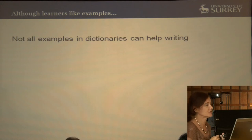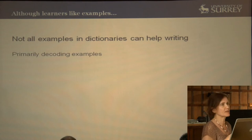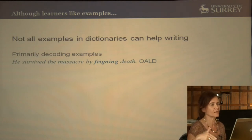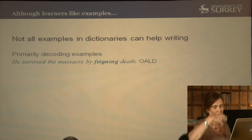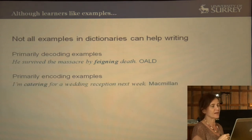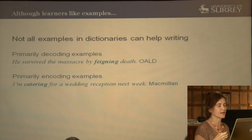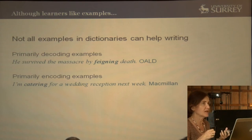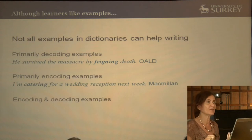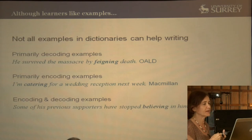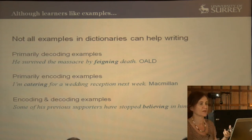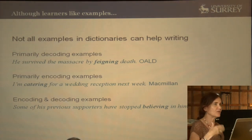Not all examples in dictionaries can help writing. Some examples are primarily decoding examples — for instance, 'survived the massacre plus death' can give you a hint of what 'feigning' might mean, so you can deduce the meaning from context. Some examples are primarily encoding examples — here you can see that you must use the preposition 'for' after 'catering.' And then some examples do both at once: 'previous supporters' and 'stopped together' hint at what 'believing' means, and it's also intransitive in this sense, so you can spot the preposition 'in' after 'believing.'